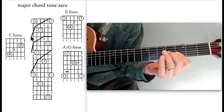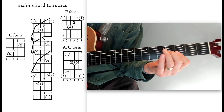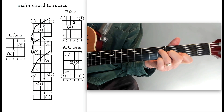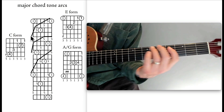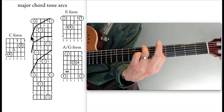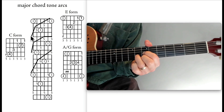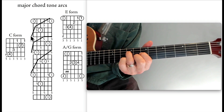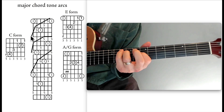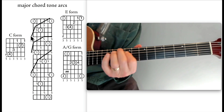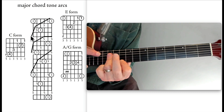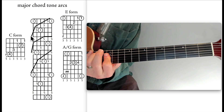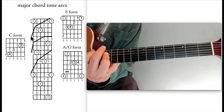Then play three consecutive strings of each arc, making four sets. The E-form arc gives you strings 3-2-1, 4-3-2, 5-4-3, or 6-5-4. The A-G form arc similarly covers strings 3-2-1, 4-3-2, 6-5-4-3, or 6-5-4.